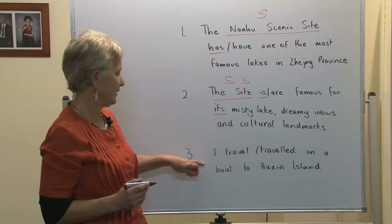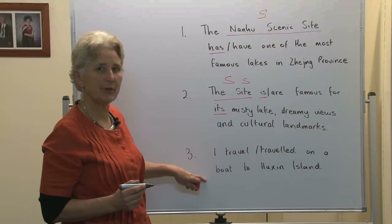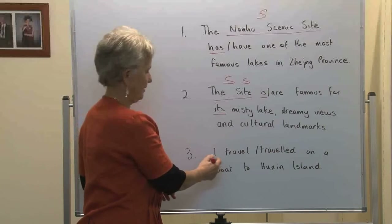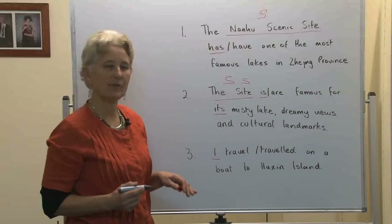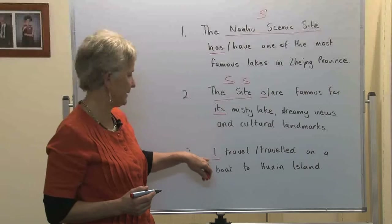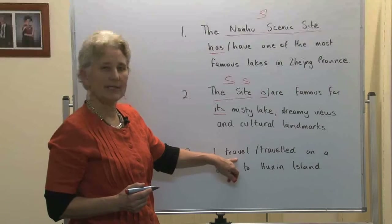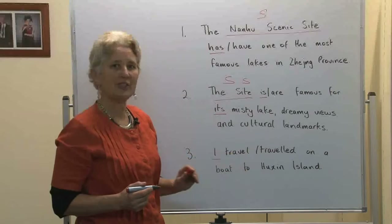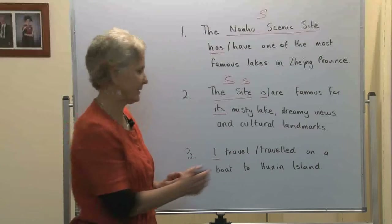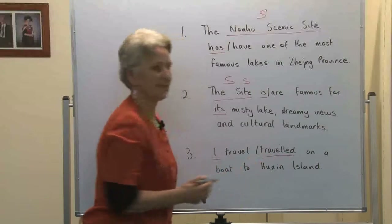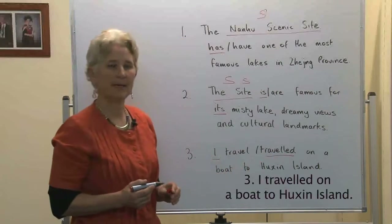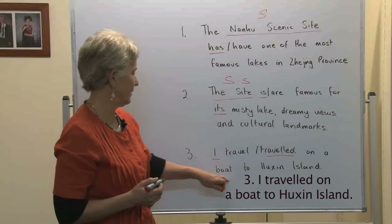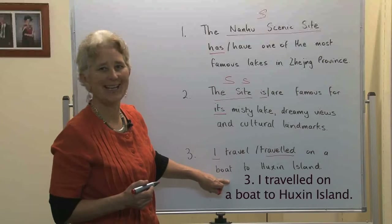Number three: I travelled on a boat to Huxing Island. I is the grammatical subject of that sentence. Pearl is talking about something she did in the past tense. Notice that the verb has the regular -ed ending: travelled.